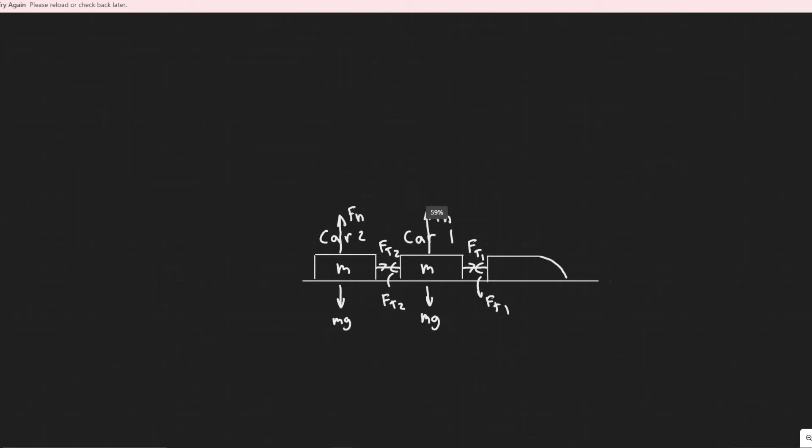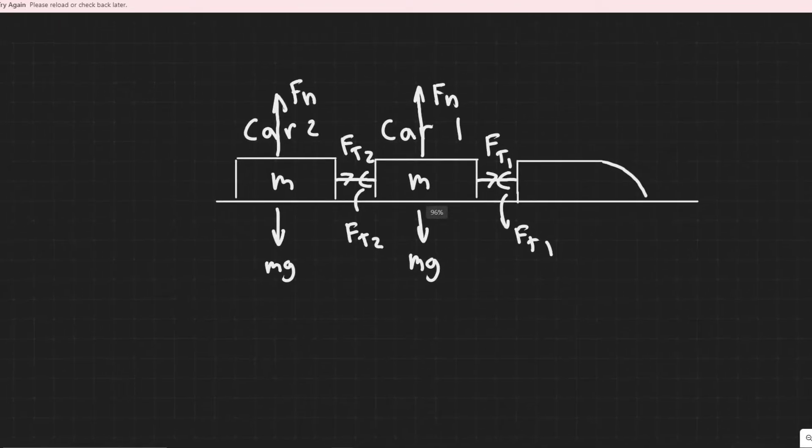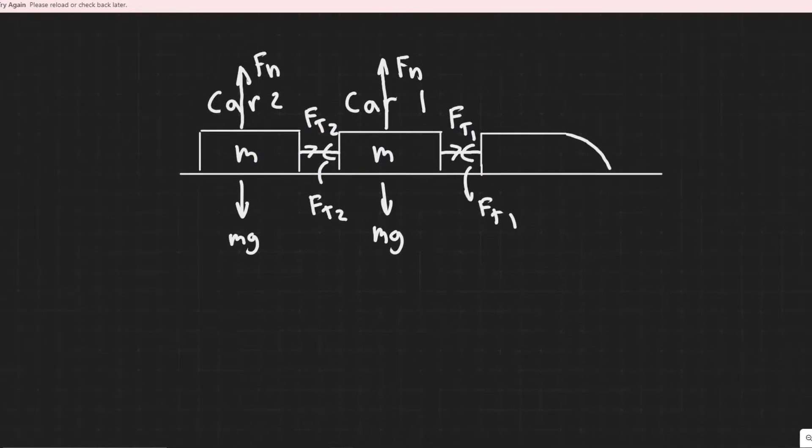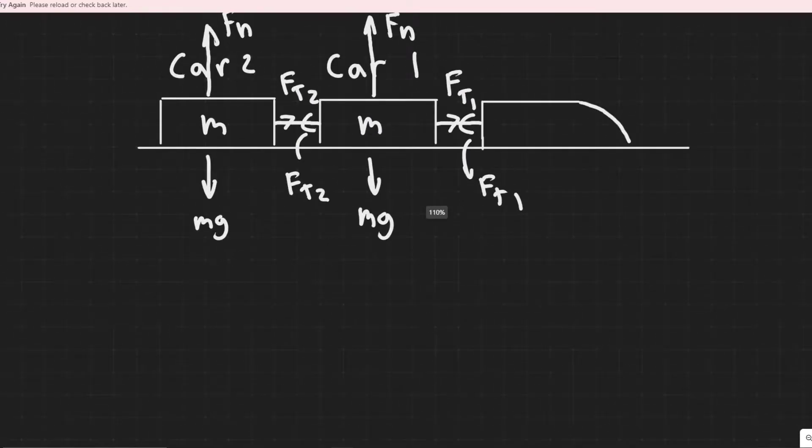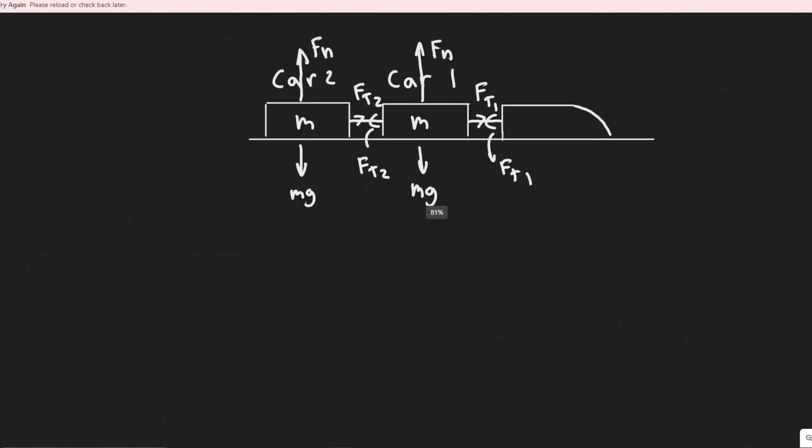And so now what we're going to do is we're going to basically sum the forces along the X for each of these cars, and that's going to allow us to solve for the ratio. So we're going to start off with car 2 here.